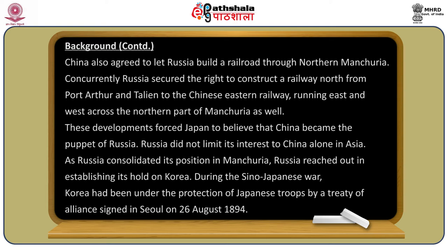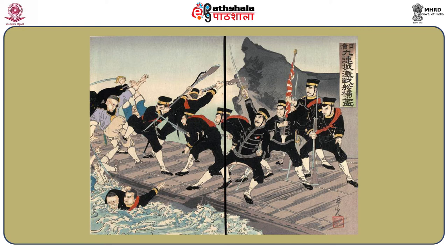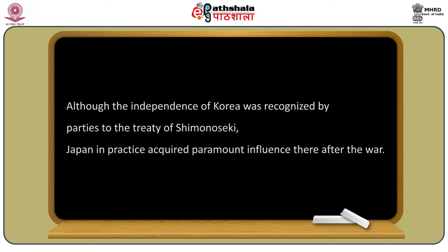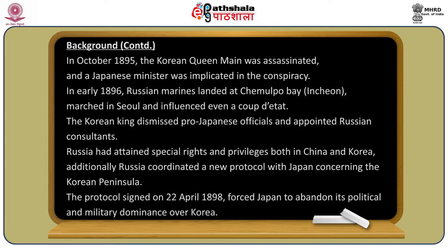Russia did not limit its interest to China alone. As Russia consolidated its position in Manchuria, it reached out to establish its hold on Korea. During the Sino-Japanese War, Korea had been under the protection of Japanese troops by a treaty of alliance signed in Seoul on 26 August 1894. Although the independence of Korea was recognized by the Treaty of Shimonoseki, Japan in practice acquired paramount influence thereafter.